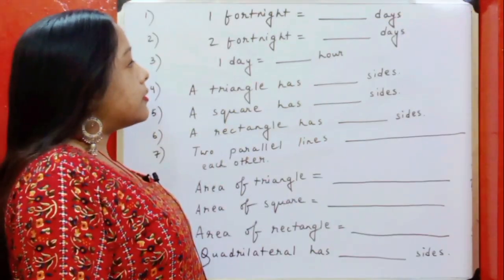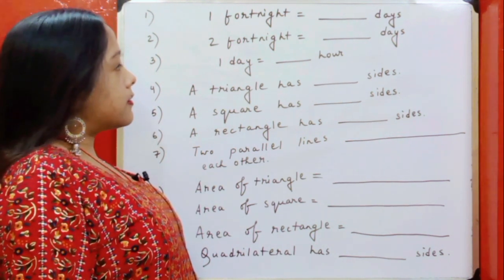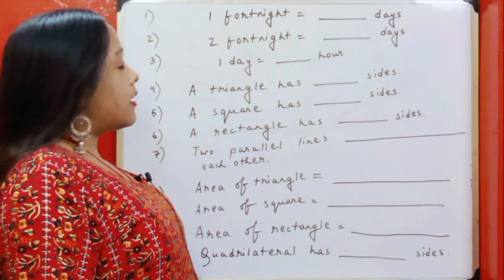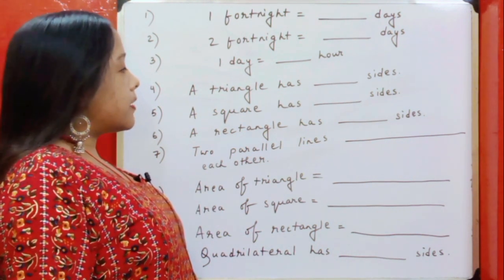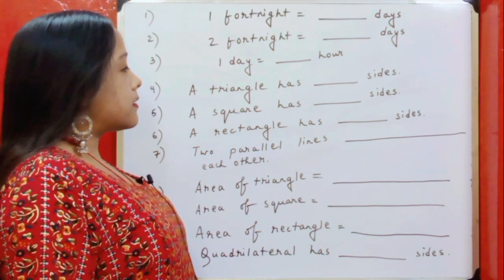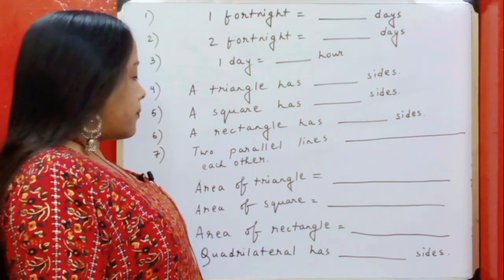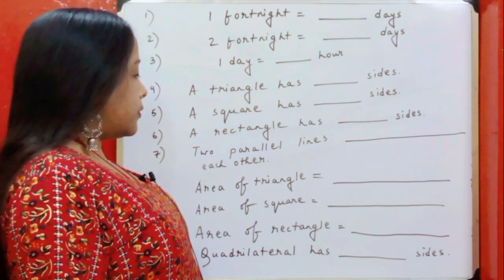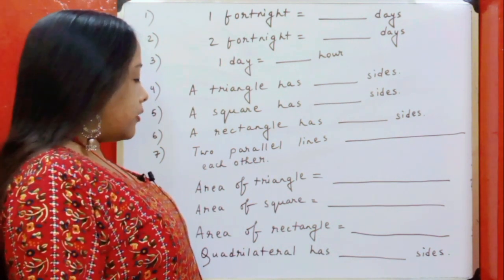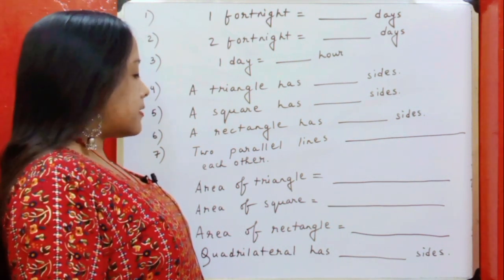One fortnight is equal to dash days. Two fortnight is equal to dash days. One day is equal to dash hour. A triangle has dash sides. A square has dash sides. A rectangle has dash sides. Two parallel lines dash each other. Area of triangle is equal to dash. Area of square is equal to dash. Area of rectangle is equal to dash. Quadrilateral has dash sides.